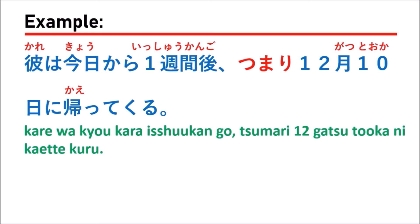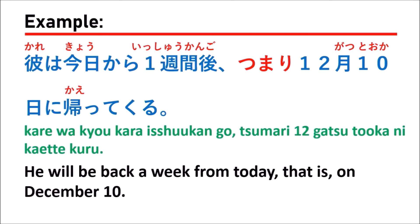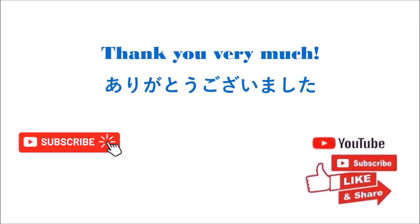The next example is: 彼はきょうから1週間後、つまり、12月10日に帰ってくる。 Which means: he will be back a week from today. That is, on December 10. If you just say 'he will be back a week from today,' maybe someone doesn't understand. So you can say the specific day using Tsumari — 12月10日 — so they will understand exactly when.